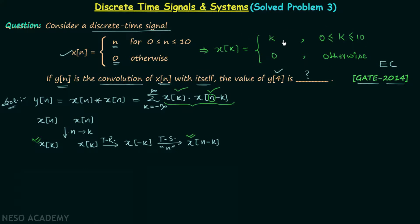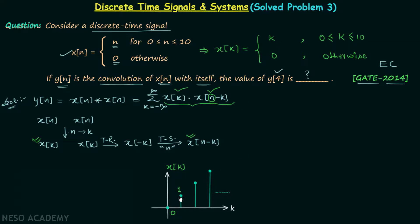Using this definition, we can write out the sequence of signal xk. Signal xk is equal to 0 when k is equal to 0, equal to 1 when k is 1, 2 when k is 2, 3 when k is 3, and so on up to k equal to 10. For values of k beyond 10 — that is, k equal to 11 and higher — xk is equal to 0.